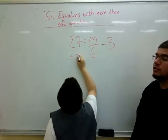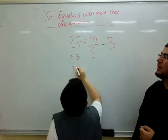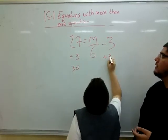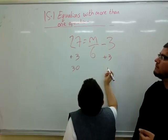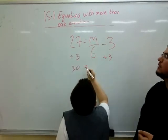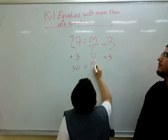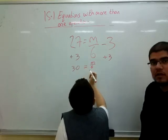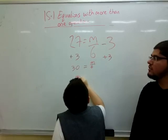Good, so he's going to add 3 to both sides first. 27 plus 3 is 30, which equals, no, 30 equals m over 6. And then you times by 6. Good, so now we're going to multiply by 6 on both sides.